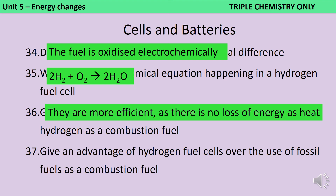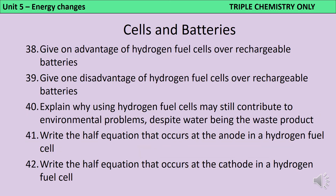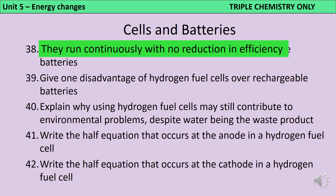Hydrogen fuel cells have an advantage over using fossil fuels as a combustion fuel because there isn't any direct release of carbon dioxide, because the only waste product is water. One advantage of hydrogen fuel cells over rechargeable batteries is that they run continuously rather than as a batch process, so there's no reduction in efficiency. However, a disadvantage is that hydrogen is extremely flammable and explosive and therefore very difficult to store.